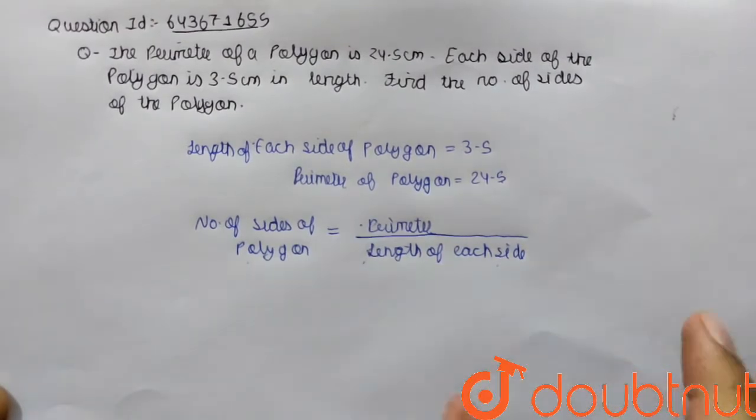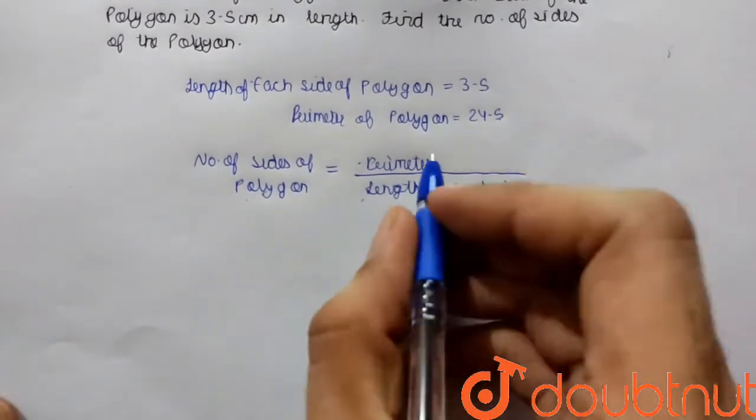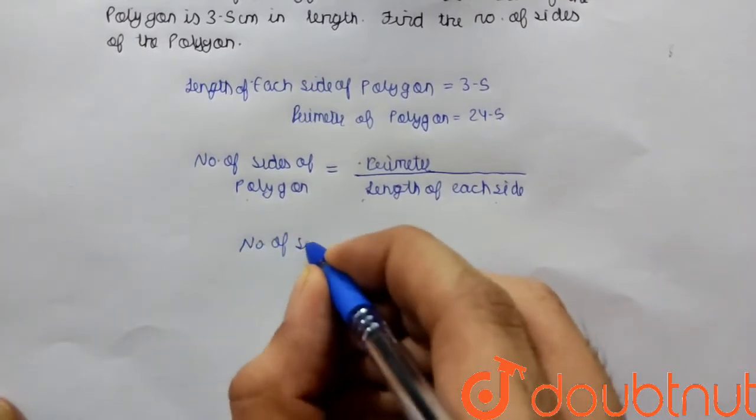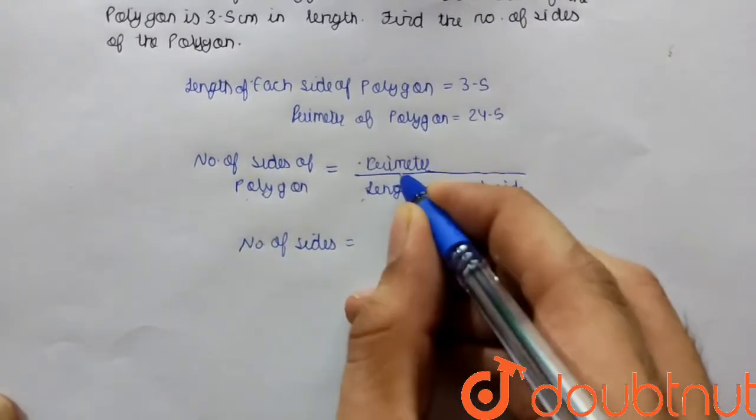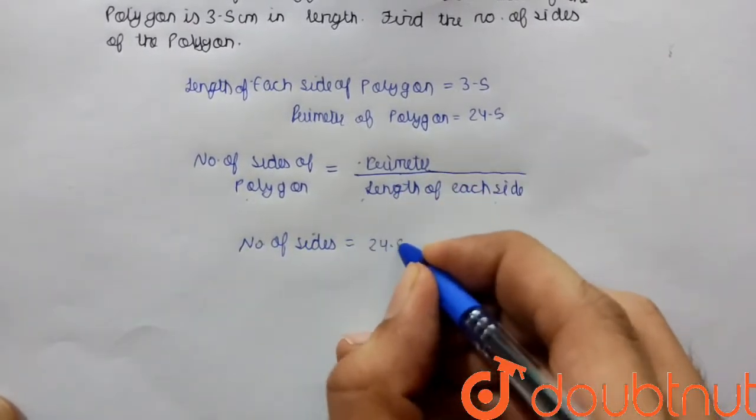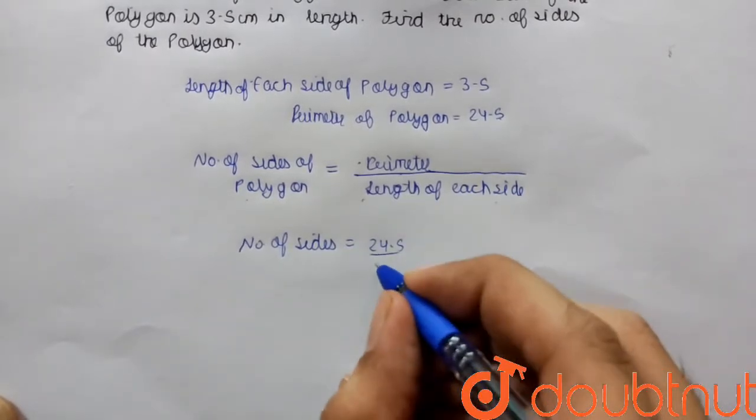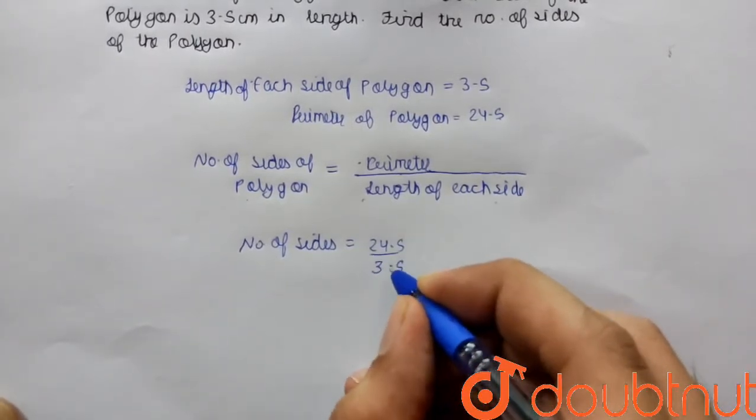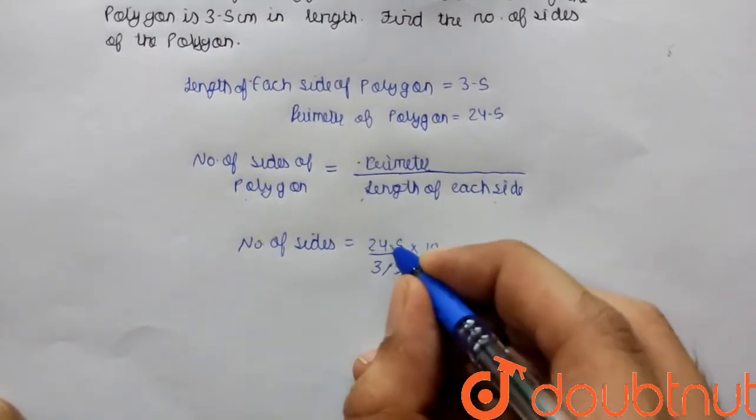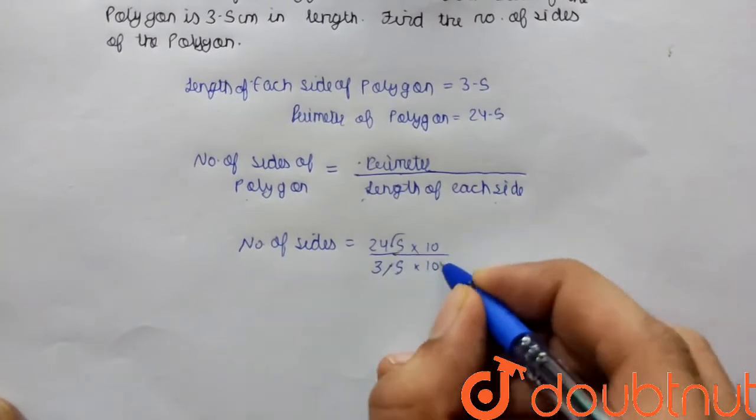We have values of both terms, so number of sides can be written as perimeter which is 24.5 upon length of each side which is 3.5.